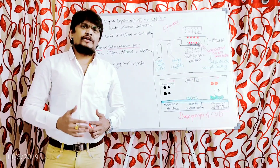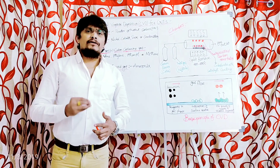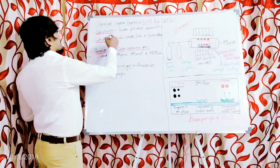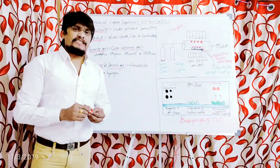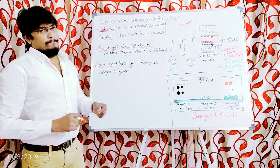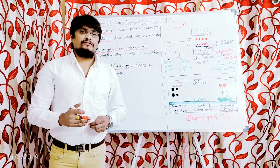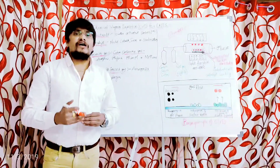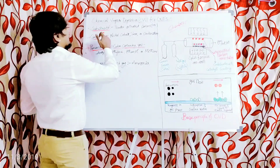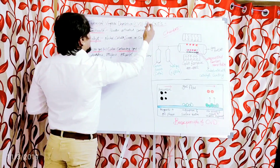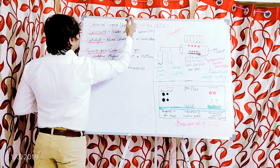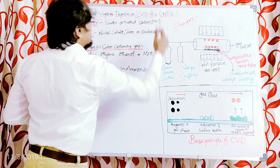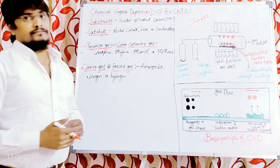This chemical vapor deposition method, which is used for the preparation of carbon nanotubes, mainly consists of four substances. The first substance is the substrate. The substrate is the one on whose surface the reaction — that is, the change — occurs. The example of the substrate for CNT preparation using CVD is powder activated carbon, popularly called PAC.